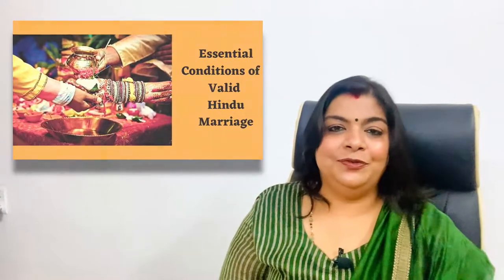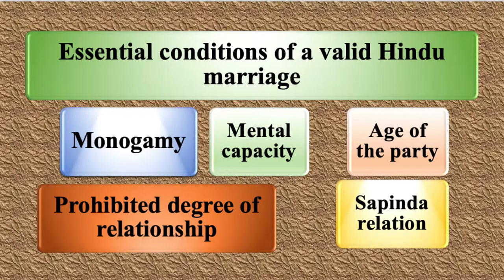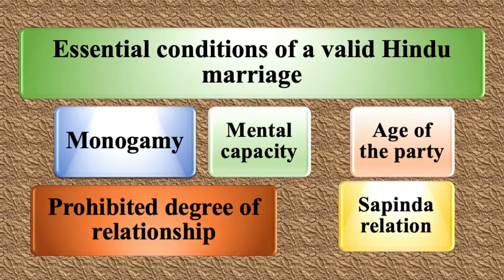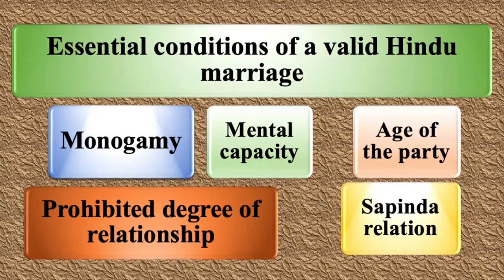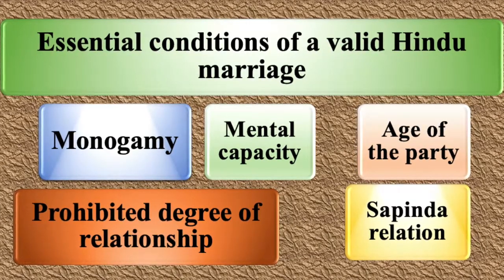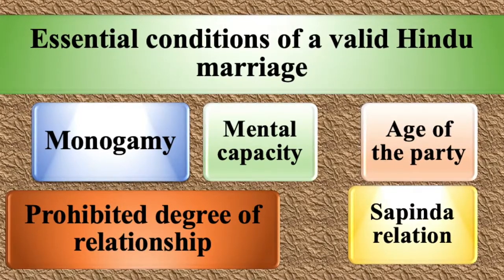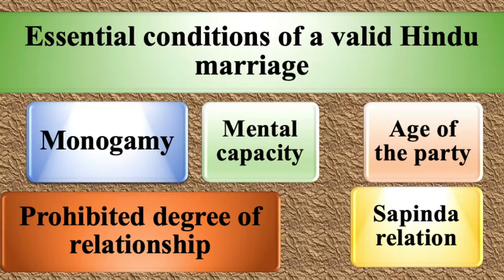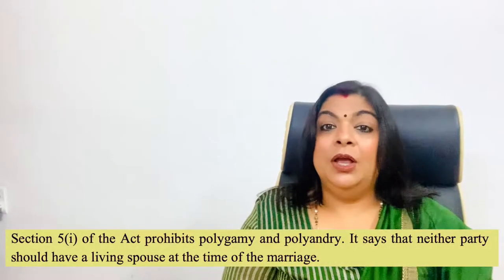Under the Hindu Marriage Act 1955, although there are ten sacraments of Hindu marriage, by the time there are many amendments and now there are five essentials which have been mentioned under Section 5 of the Hindu Marriage Act. These are: first, monogamy; second, mental capacity; third, age of the party; fourth, prohibited degree of relationship; and fifth, Sapinda relationship.